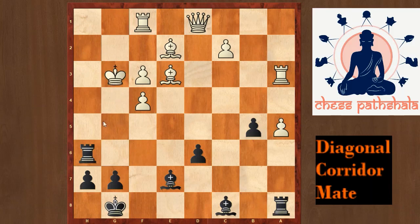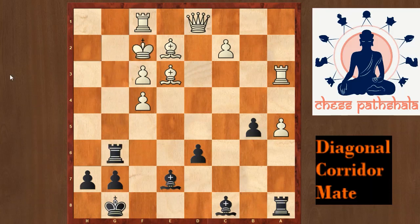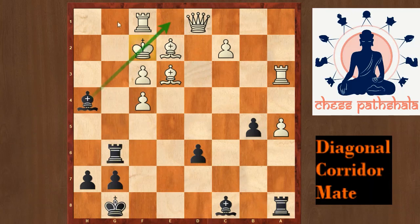If after rook g6 check the king decides to avoid the draw and goes to f2, then we have the diagonal corridor mate with the fantastic move bishop to h4. You can see how beautifully the king is trapped in the center of the board on f2, and the rook is nicely guarding all the escape squares. This is all you need to know about diagonal corridor mate. Thank you.